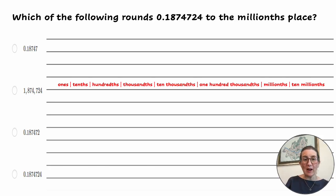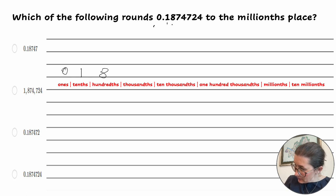Which of the following rounds 0.1874724 to the millionths place? Let's take a look and break it down into place values. So the ones place is 0, tenths is 1, 8 is the hundredths, the thousandths is 7, ten thousandths is 4, hundred thousandths is 7, millionths is 2, and ten millionths is 4.